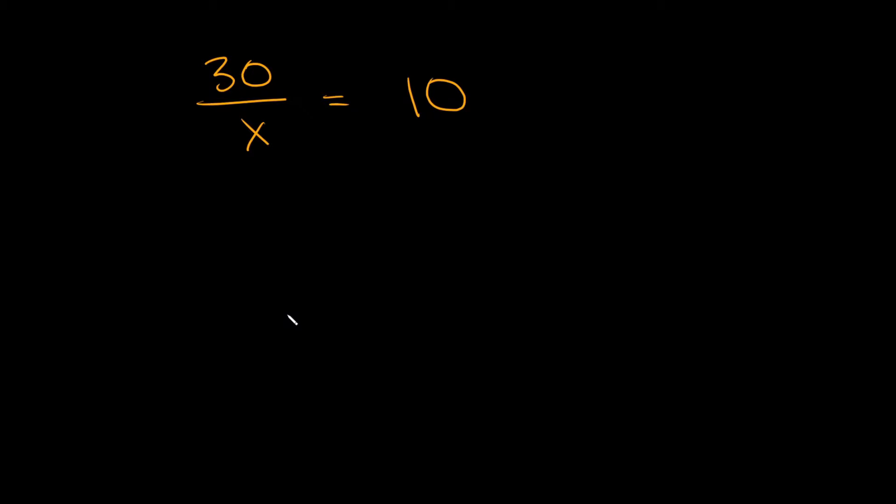So in this example we have 30 over x is equal to 10. As you can see, the variable is in the denominator. So whenever your variable is in the denominator like this, you're gonna multiply by that variable on top.